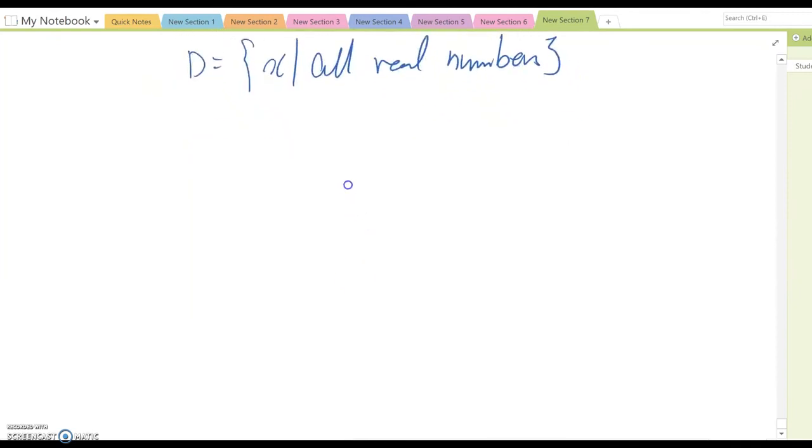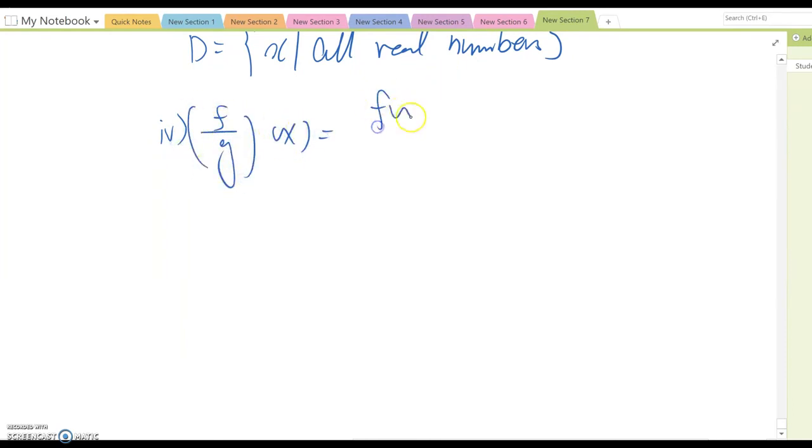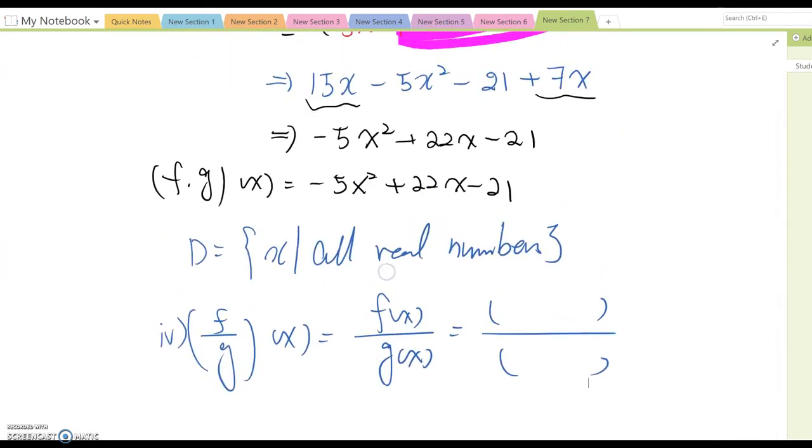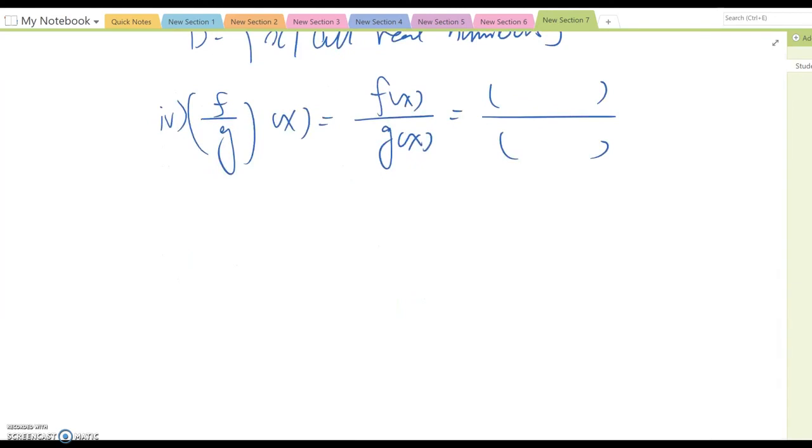Okay, number four. We want to find out (f/g)(x), which means f(x) over g(x). So that will be (5x - 7) over (3 - x). So now we can write (f/g)(x) equal to (5x - 7) over (3 - x). Right. And here, please be careful, you cannot cancel this and this stuff, because they are binomials. So you cannot do that. So the remaining factor is still (5x - 7) over (3 - x). But here we have one limitation, which is this one, because 3 minus x cannot be zero.